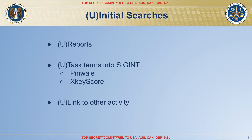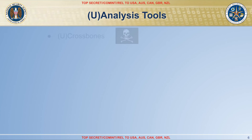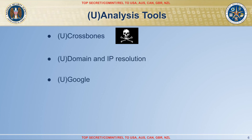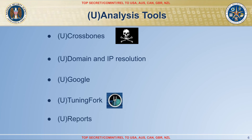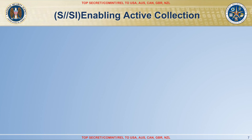The analysis tools the SIGINT analysts subsequently used were Crossbones — an NSA tool with records of detected intrusions — as well as open source analysis tools to perform resolutions of domain names and IP addresses and research what is publicly known about those indicators. Next was TuningFork, which at the time was an NSA database containing passwords searchable using XTSCore, and of course existing intelligence reports. Using all of that, the SIGINT analysts could identify infrastructure belonging to this Chinese cyber-espionage actor.